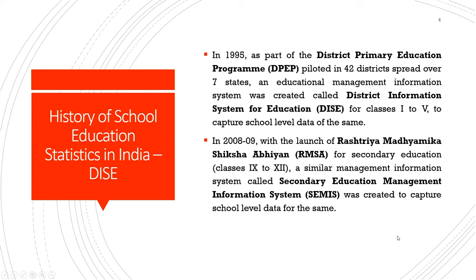Looking at the history of school education statistics in India: in 1995, the District Primary Education Programme (DPEP) was piloted in 42 districts across seven states. One important area the pilots worked on was creating an education management information system. As part of this exercise, the District Information System for Education (DISE) was created for classes 1 to 5 — the lower primary classes — to capture school-level data, as increasing enrollments was an important policy focus.